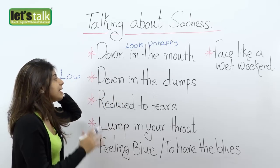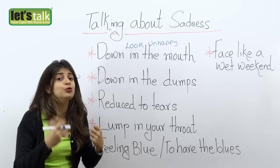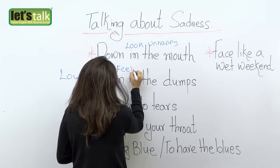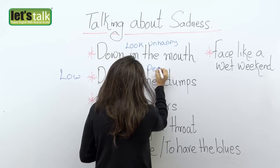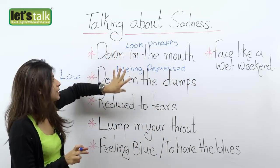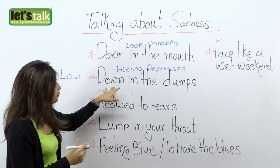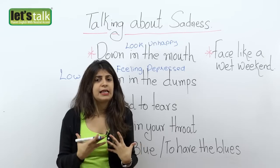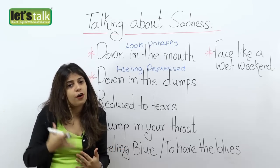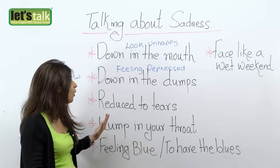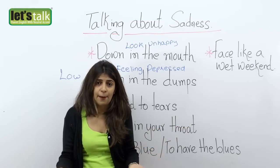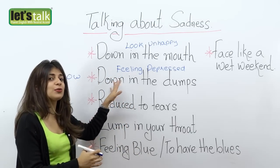Another expression is 'down in the dumps.' Down in the dumps means that you actually feel miserable or depressed — not just that you look unhappy, but that you genuinely feel unhappy. Down in the dumps can be used in sentences like: 'Sharon is down in the dumps because her boyfriend went on a boys' trip leaving her alone.' Or: 'John seems to be down in the dumps because he failed his examinations.' That's the way you can use this expression.